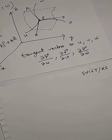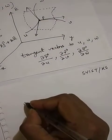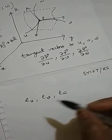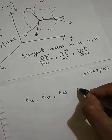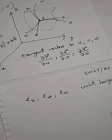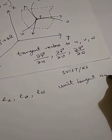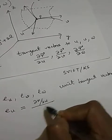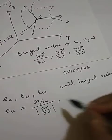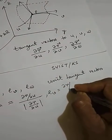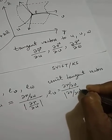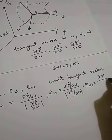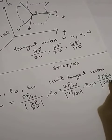Let us take the unit tangent vectors as e_u, e_v, e_w to the curves u, v, w respectively. Then e_u equals del r / del u divided by the modulus of del r / del u. e_v equals del r / del v divided by the modulus of del r / del v. e_w equals del r / del w divided by the modulus of del r / del w.